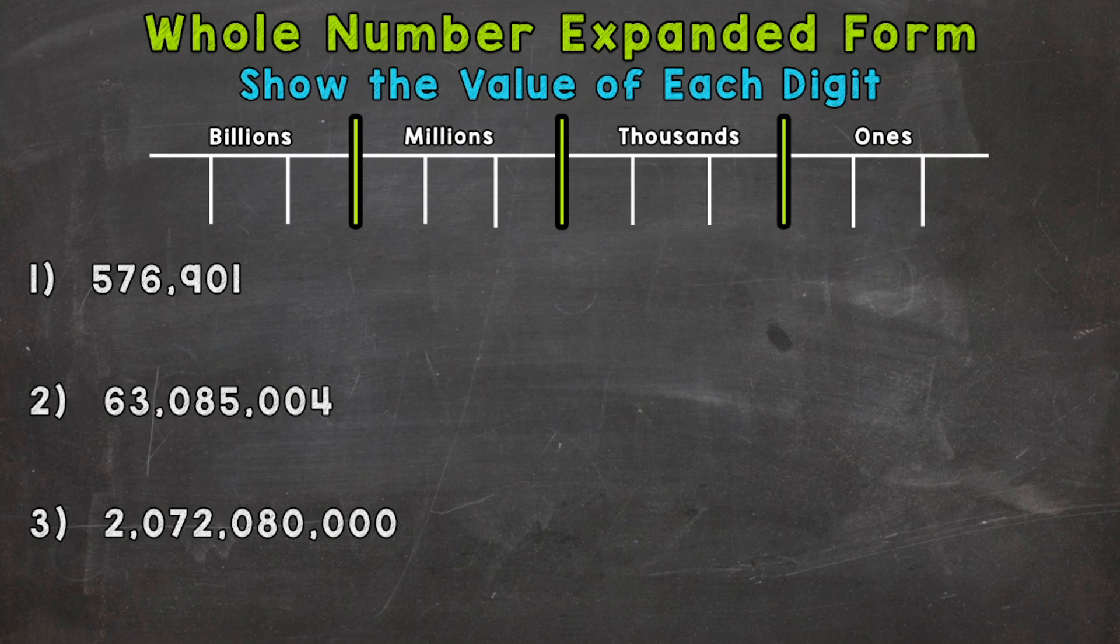So let's jump into number one where we have 576,901 and I'm going to write it up here in our chart. So we have 576,901 and we have a comma right here.